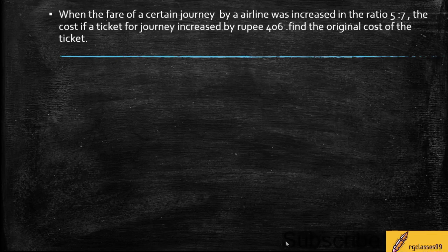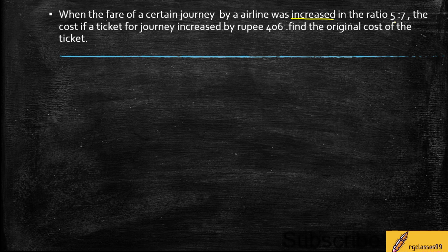In this video, we will talk about a new question about airlines. When the fare of a certain journey by an airline was increased, the airline fare increased in ratio 5 to 7. The cost of the ticket for the journey increased by Rs. 406. Find the original cost of the ticket.